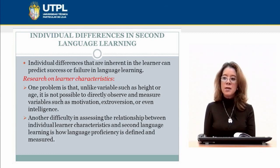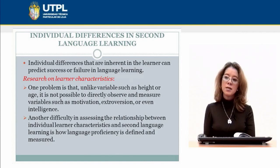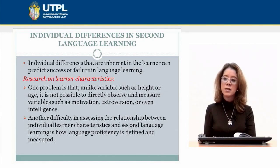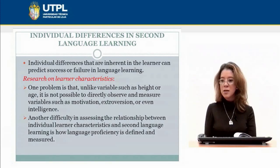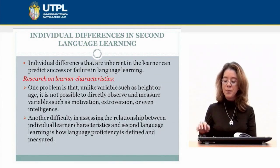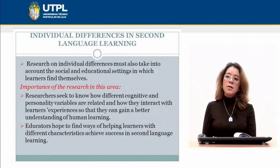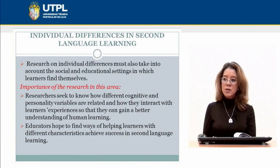One of these research findings is that unlike variables such as height or age, it is not possible to directly observe and measure variables such as motivation, extroversion, or even intelligence. Another difficulty in assessing the relationship between individual learning characteristics and second language learning is how language proficiency is defined and measured. Research on individual differences must also take into account the social and educational settings in which learners find themselves.